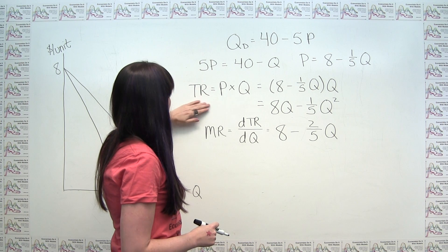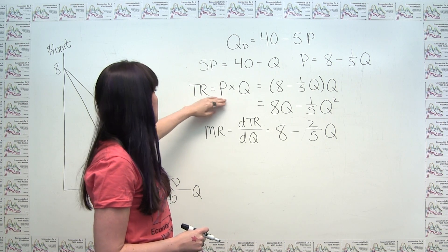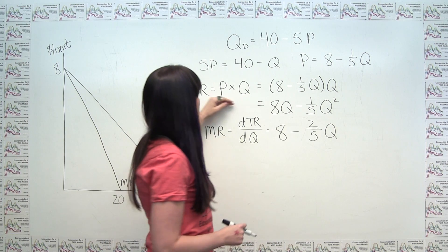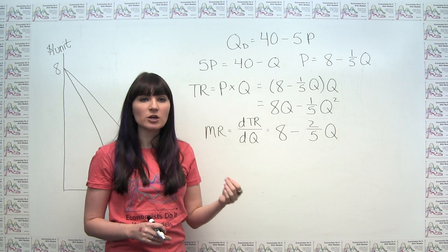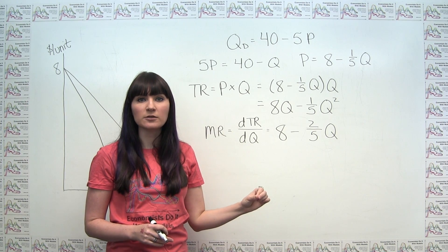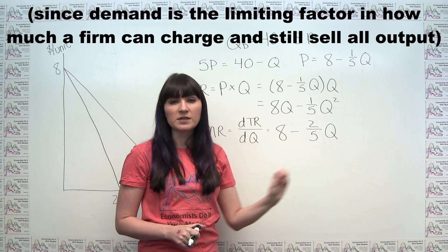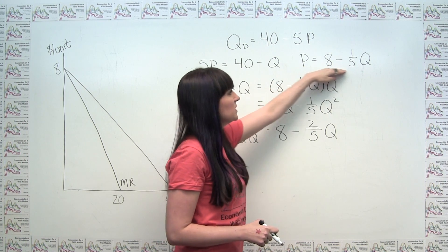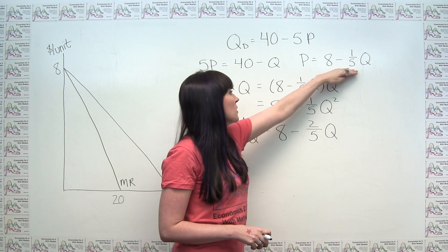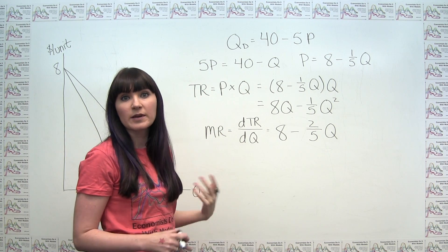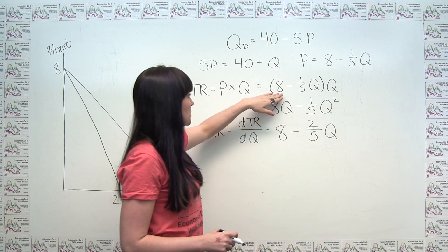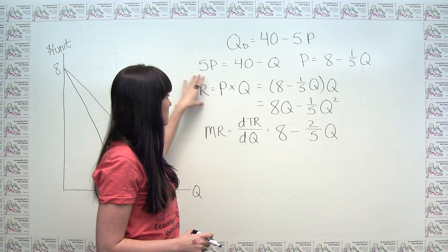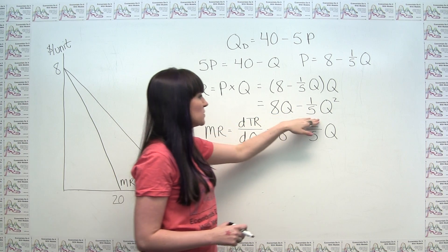Total revenue, if we're selling all of our output at the same price, is just equal to price times quantity. Since the relevant price and quantity are both determined by the demand curve, we can plug in our expression for price. Total revenue becomes (8 minus one-fifth Q) times Q, or 8Q minus one-fifth Q squared.